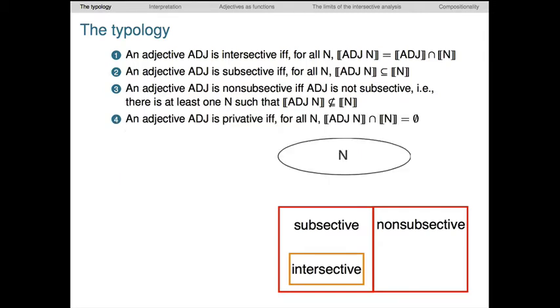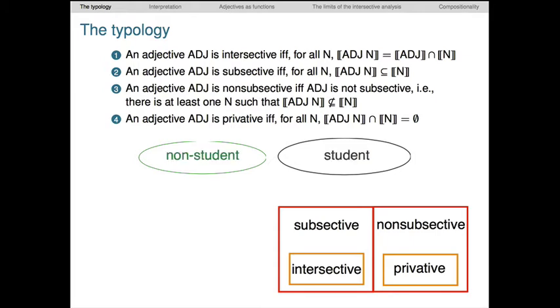Here's how we expand the typology of adjectives with the non-subsective ones. Finally, the privative adjectives are a special case of the non-subsective ones, so we find them inside the space of non-subsective adjectives. Here the condition is that ADJ N is outside the set N. Adjectives like former seem to be privative, but probably the clearest case is the prefix non- as in non-student. It's not an adjective syntactically, but it's the best example for getting at the privative intuition. The students and the non-students seem clearly to be disjoint.